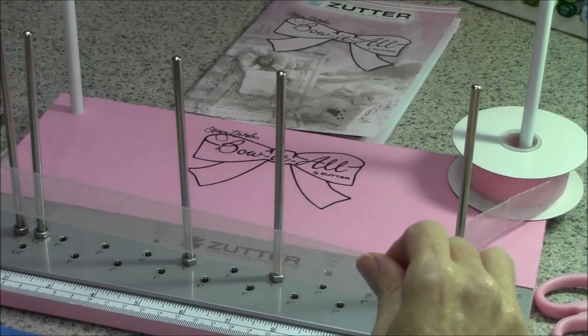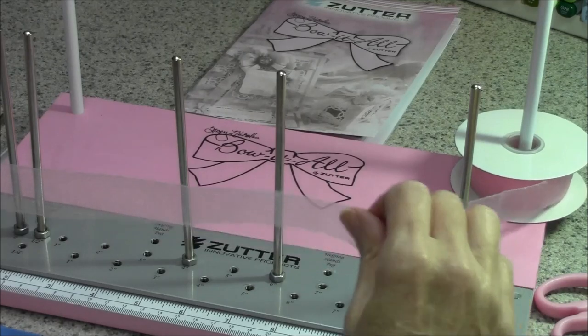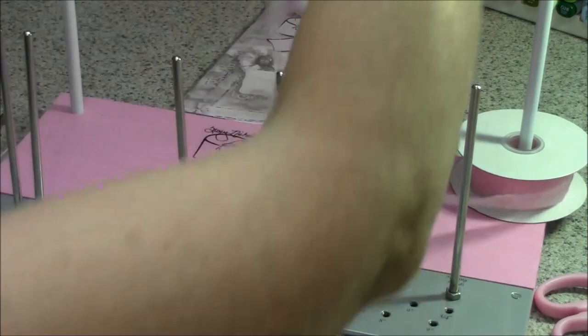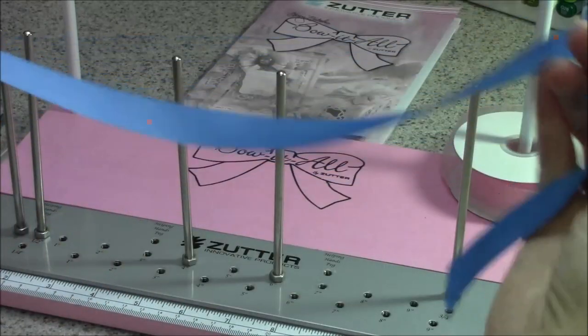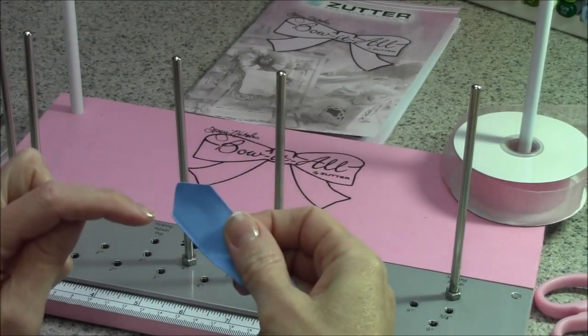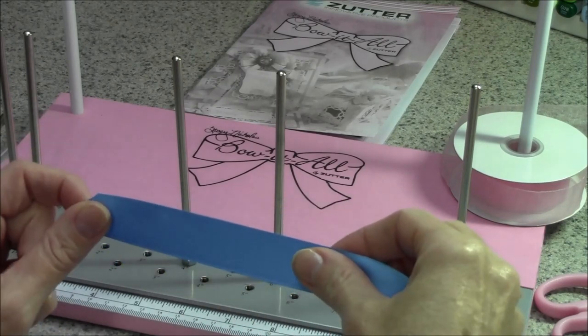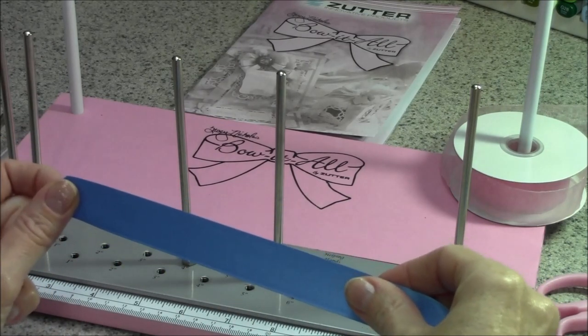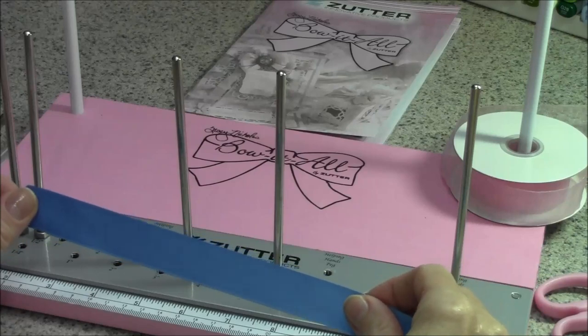When you're using spooled ribbon it's easy to know which is the working end of the ribbon because it's attached to the spool but if you're working with just cut pieces of ribbon like I often will be I've been making a point on the end of what I'm referring to as my cut end of the ribbon just so I don't get confused when I'm tying the knot.